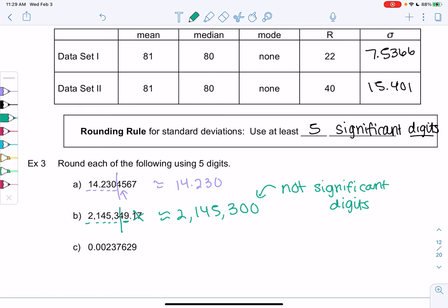And then the final example, we have 0.00237629. These zeros in the front don't count. Again, they're not significant, so they don't count. So don't count zeros in the front. So the first digit I count is the 2. So 1, 2, 3, 4, 5.